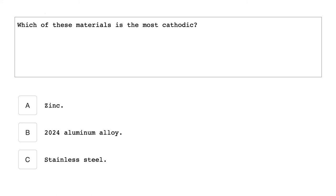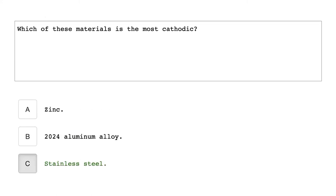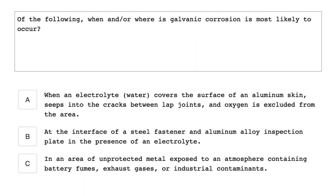Which of the materials is the most cathodic? Stainless steel. Of the following, when or where is galvanic corrosion most likely to occur? At the surface of a steel fastener and aluminum alloy inspection plate in the presence of an electrolyte.